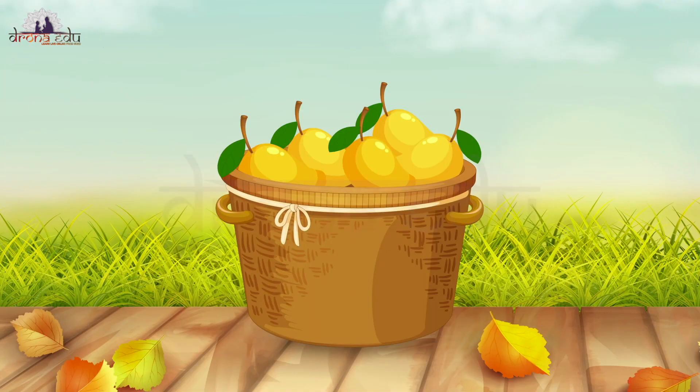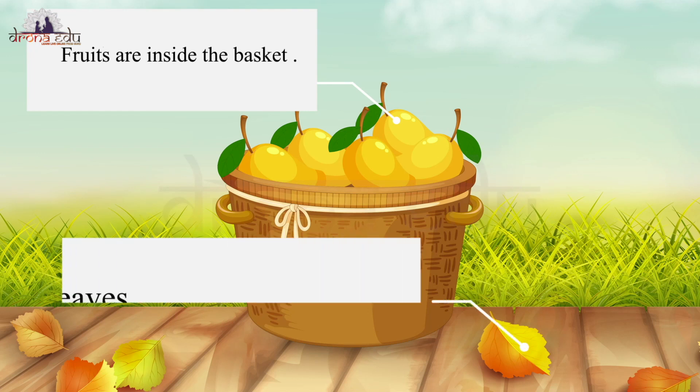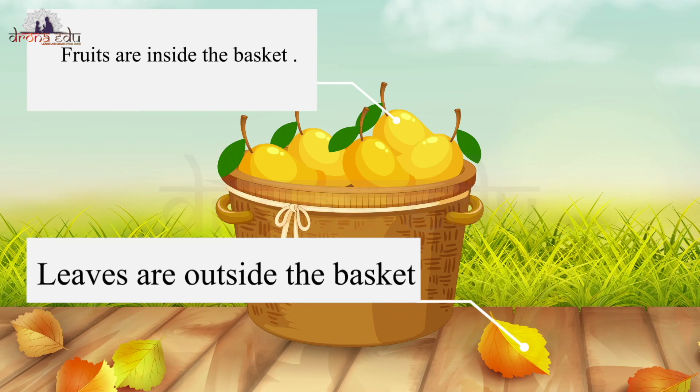Now similarly, let's see the spatial relation for inside and outside. Look at this picture — you can observe that the fruits are inside the basket and the leaves are outside the basket.